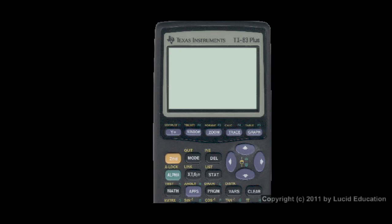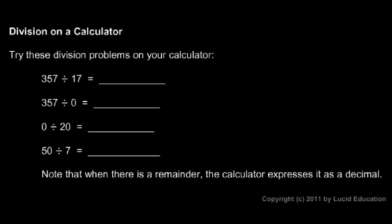Our first problem is 357 divided by 17. So you just type in 357 divided by 17, and the answer comes out to be 21. I'll fill that in - pretty easy.